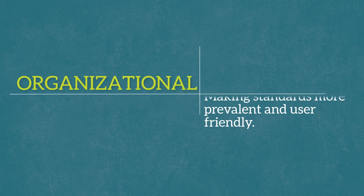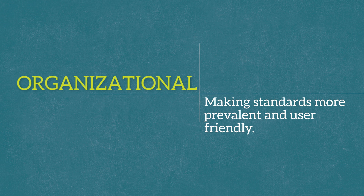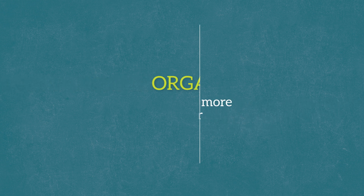The fifth area is more of an organizational area, thinking about how to make the standards more prevalent and how to organize the chapters in a different fashion that's easier for the user. For example, in the reliability and score precision chapter, which is one of the foundations chapters, standards are grouped in different categories — such as standard error of measurement or decision accuracy — so that there's meaningful organization.